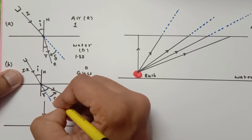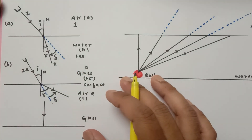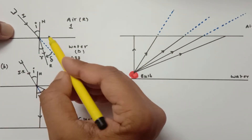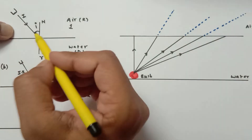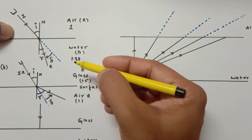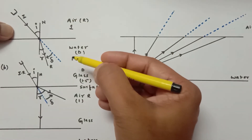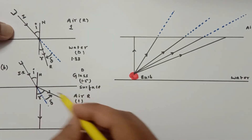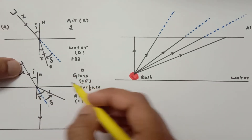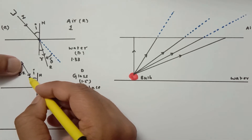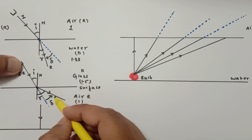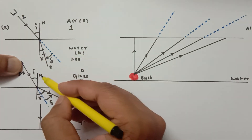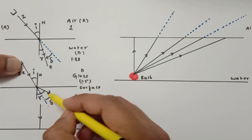To summarize: when a ray of light goes from rarer to denser it bends towards the normal and the speed of light decreases when entering the denser medium. When going from denser to rarer, the ray bends away from the normal and the speed of light increases. In Case A, the angle of incidence is less and angle of refraction is more; in Case B, the angle of incidence is more and angle of refraction is less.